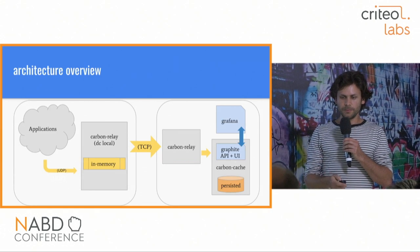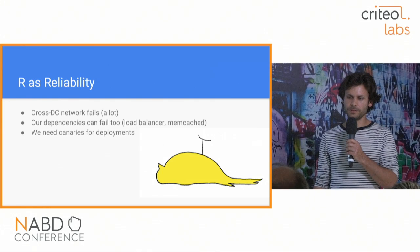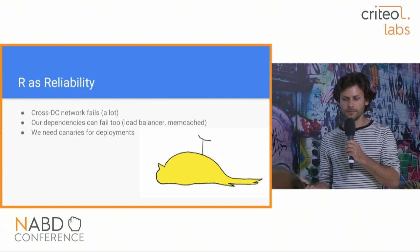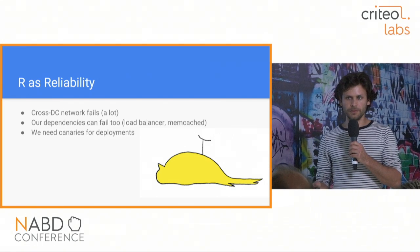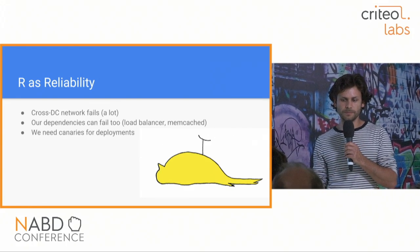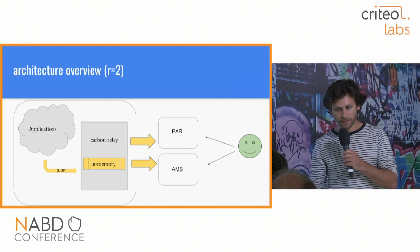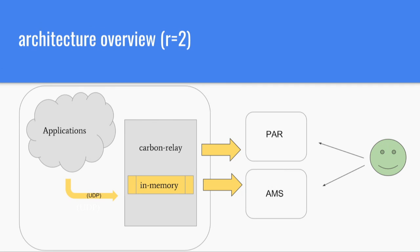There are obvious reliability issues: cross-data-center links fail roughly every two weeks, Graphite's dependencies like load balancers and Memcache can fail, and we need canaries for deployment. What we ended up doing was installing a second data center storing exactly the same data, so users are redirected to whichever is working. If both work, they can use either. This gave us a replication factor of two.